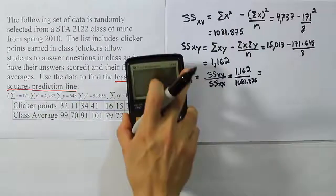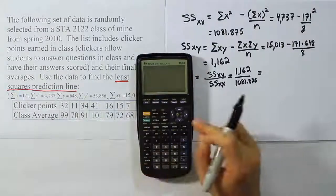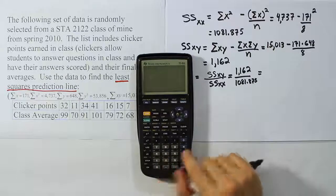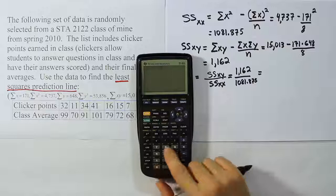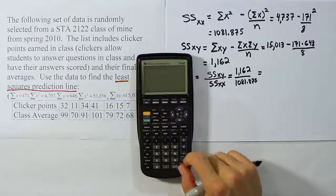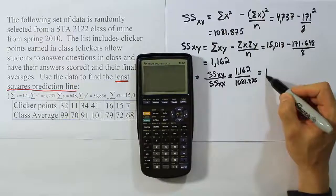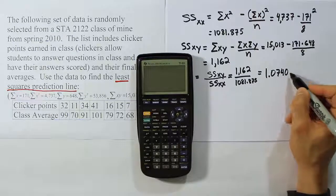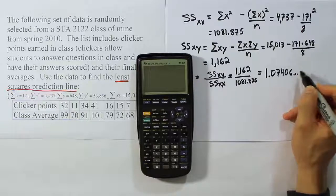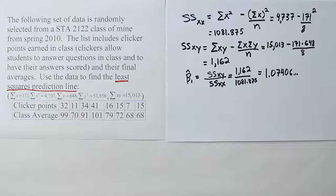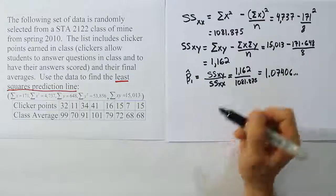Let's go ahead and put these together then. 1,162 divided by 1,081.875. We'll work that out. We end up with 1.07406 and so on. That's our estimate of the slope. That's the first part of the least squares prediction line that we have to come up with.